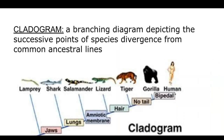Once we have an idea of where organisms have basically come from — that lineage of common ancestry — you can construct a cladogram. A cladogram is a branching diagram depicting the successive points of species divergence from common ancestral lines.